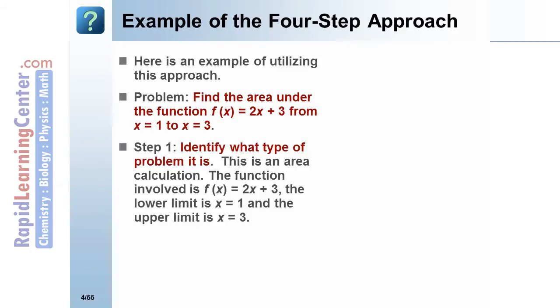Step 1: We identify what type of problem it is. This is an area calculation. The function involved is f(x) = 2x + 3. The lower limit is x = 1 and the upper limit is x = 3.